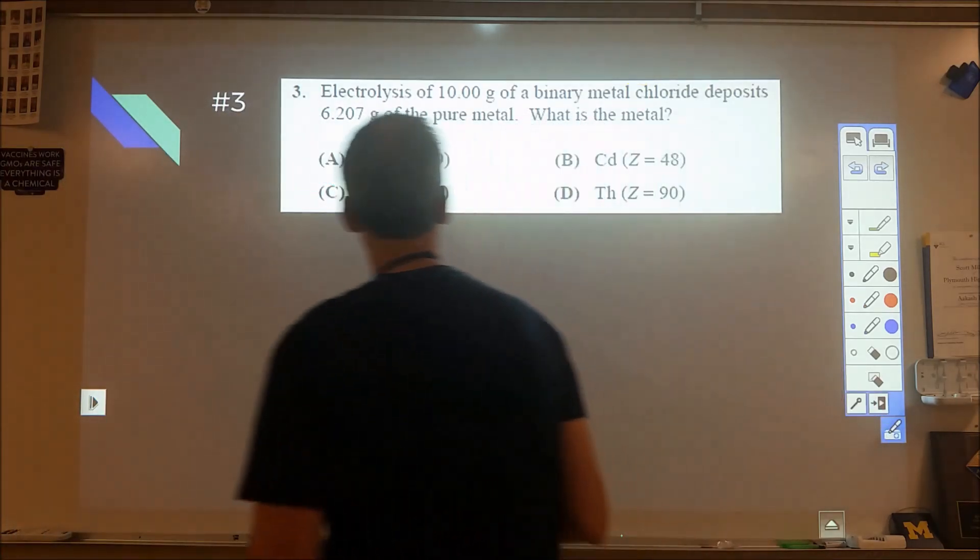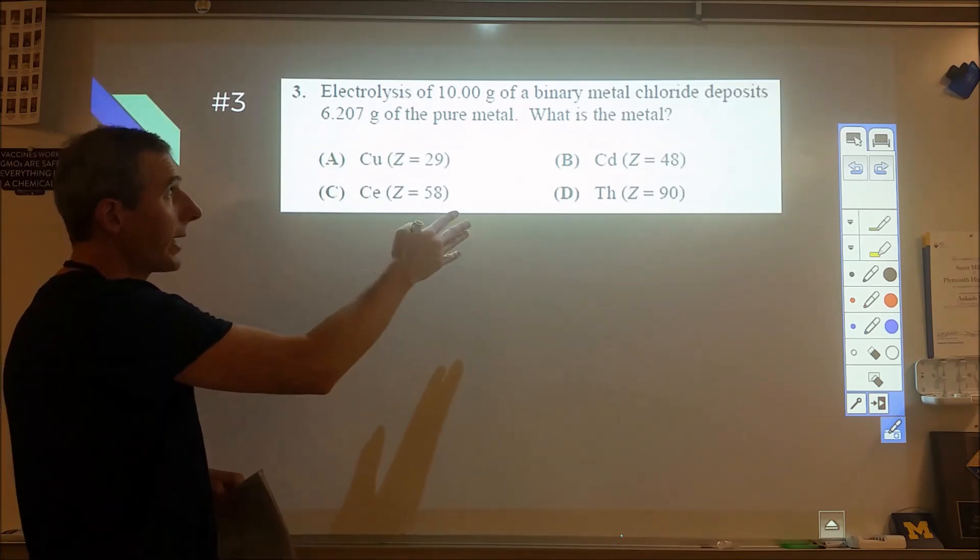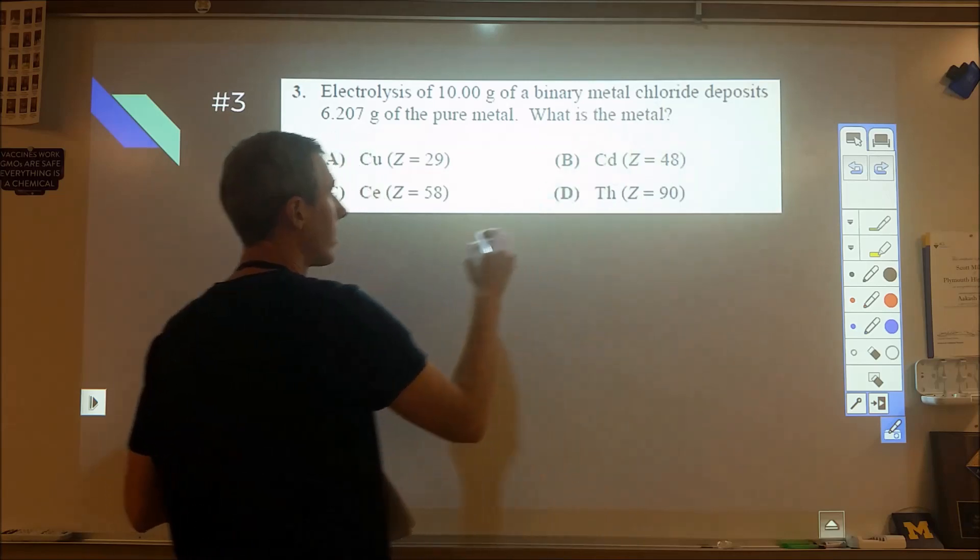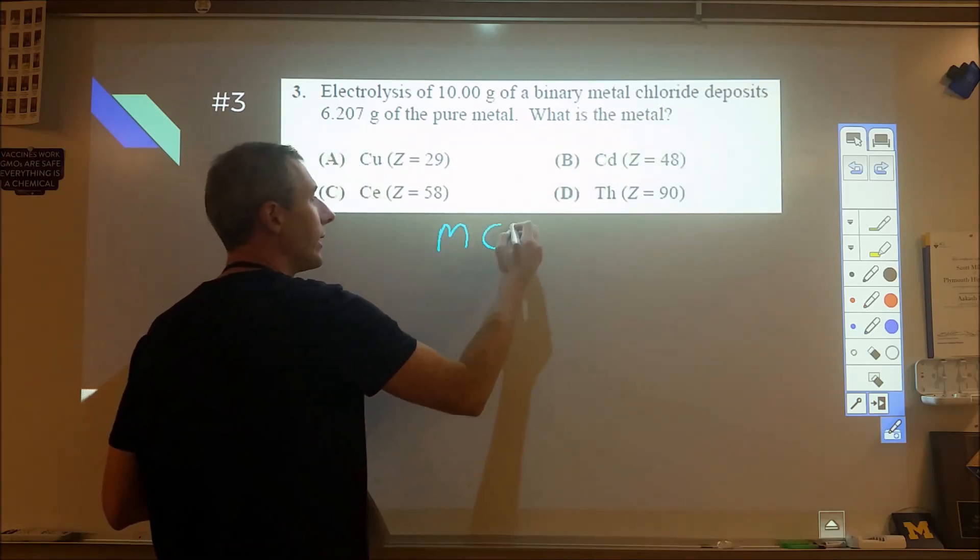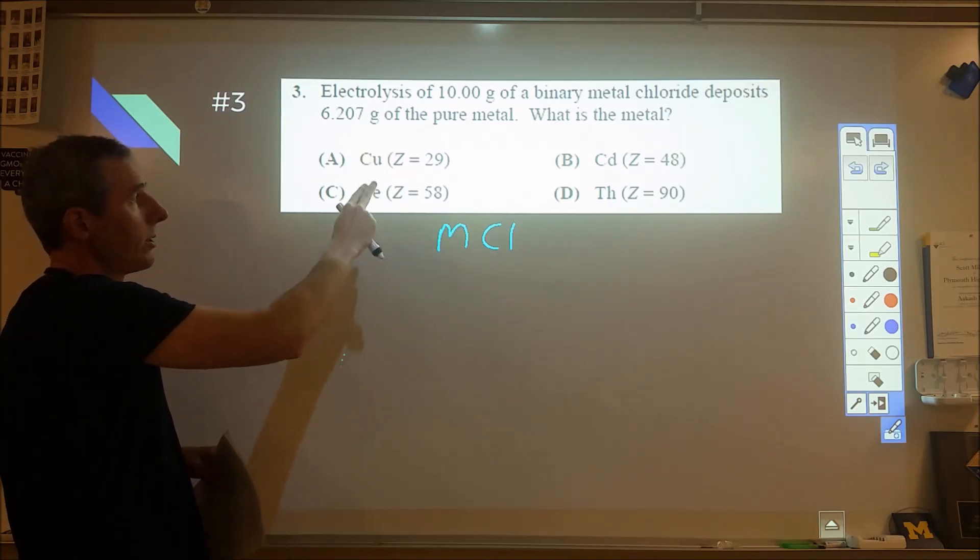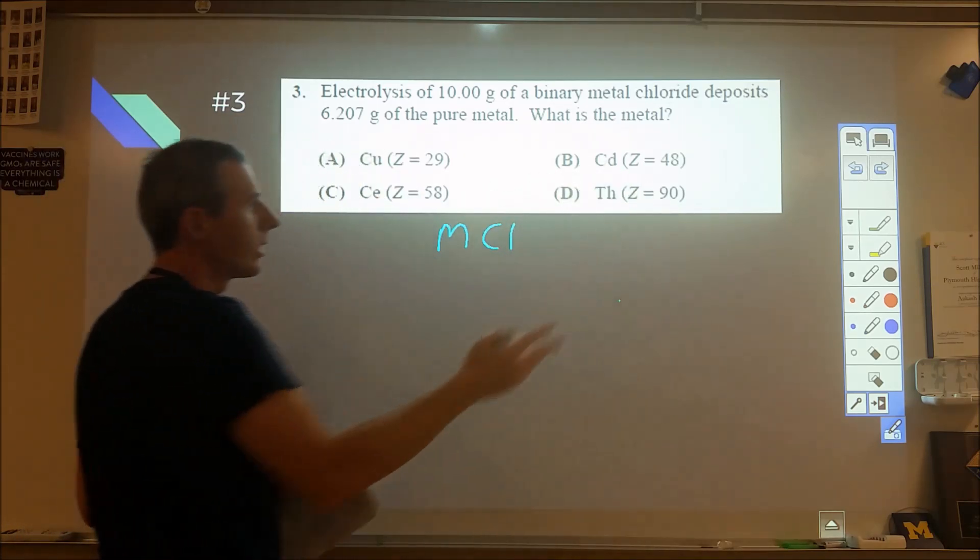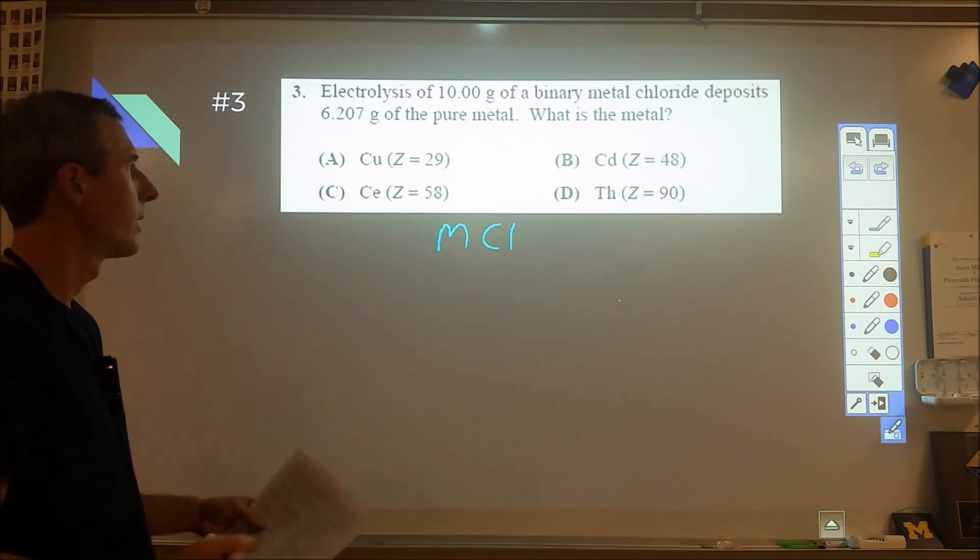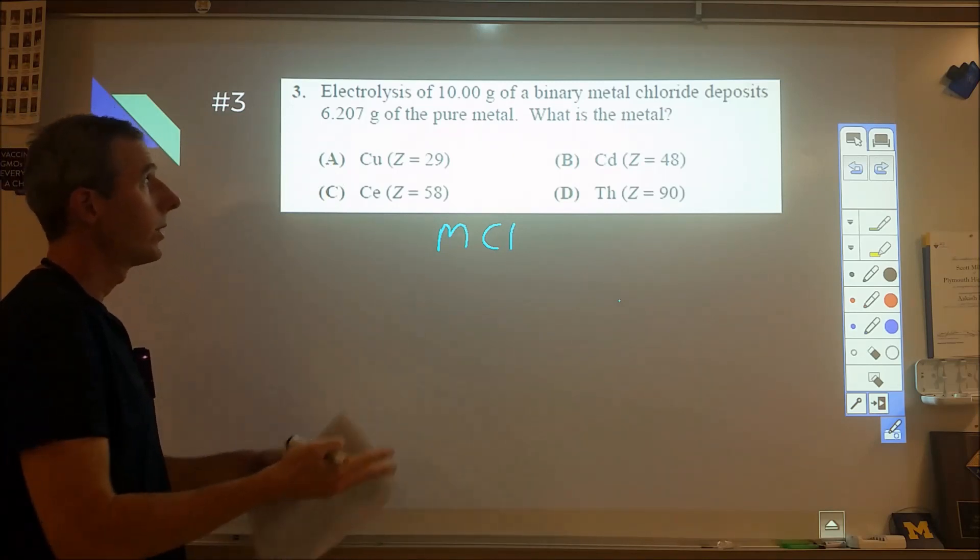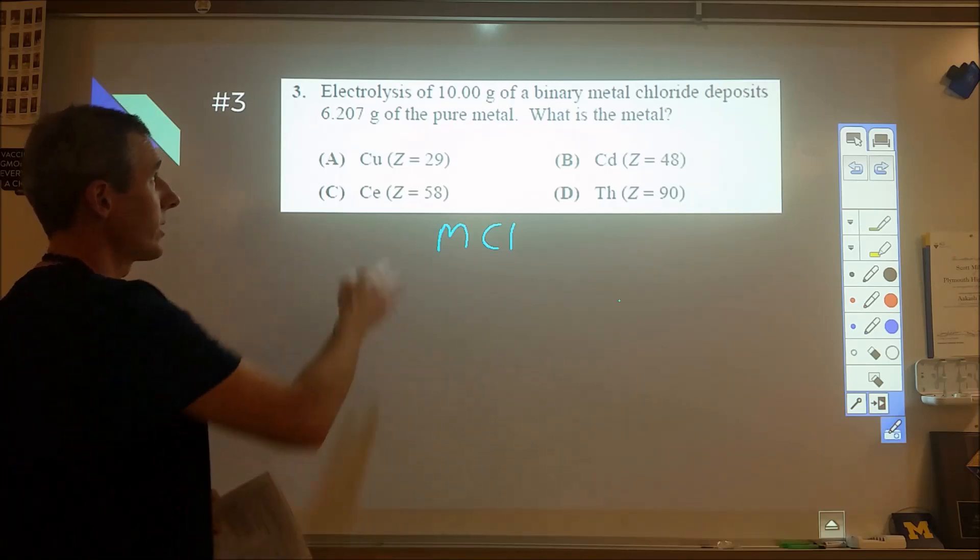We've quickly scaled up into more challenging questions. The next one, we have a binary metal chloride. We have copper, which can be plus one or plus two. Cerium, which I don't know the charges of. Cadmium, I think is plus two. And thorium, plus two, plus four, I'm not really sure. We don't really know what our charge of our metal is, so we have to work around that and figure that out.